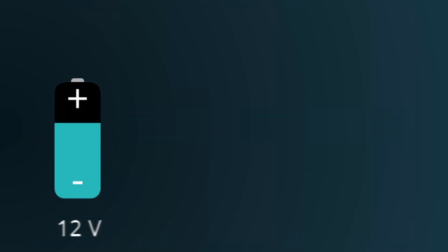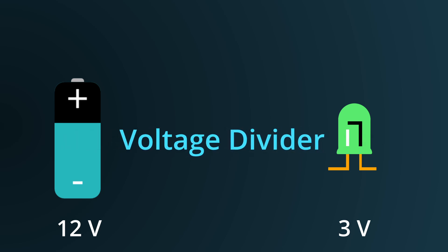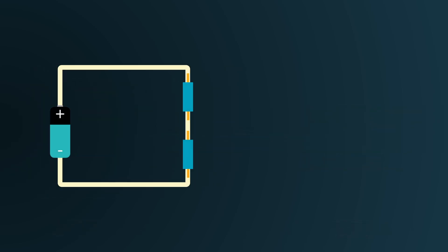Imagine a scenario where you have a battery that outputs 12 volts. Now you also have an LED that is rated only for 3 volts. Is there a way to reduce the battery voltage and make it suitable for the LED? Yes, this is exactly what the voltage divider circuit is useful for.